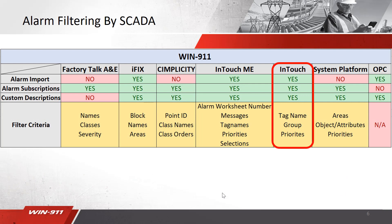This slide is a quick rundown of all the SCADAs that WIN911 supports for Direct Connects, including FactoryTalk, iFix, Simplicity, InTouch ME, System Platform, and of course today InTouch. If you don't have one of these SCADAs, you can use OPC to connect to WIN911. Using InTouch, you have two options to bring your alarms over: alarm import and subscriptions.